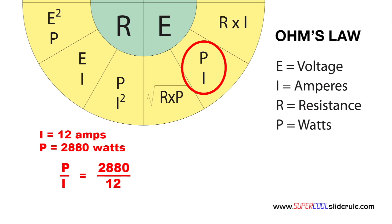Let's substitute these values into our equation: replace the P with 2880, replace the I with 12, divide, and our answer is 240.